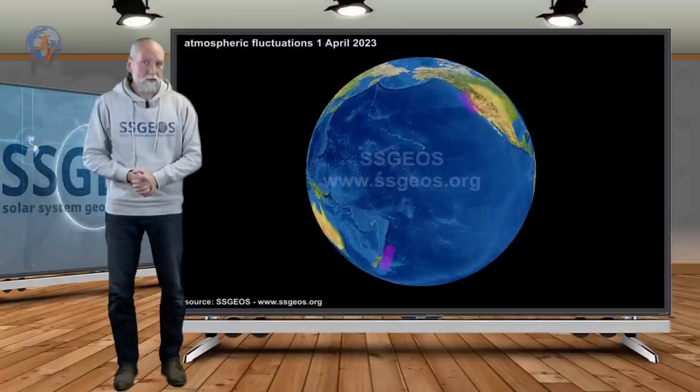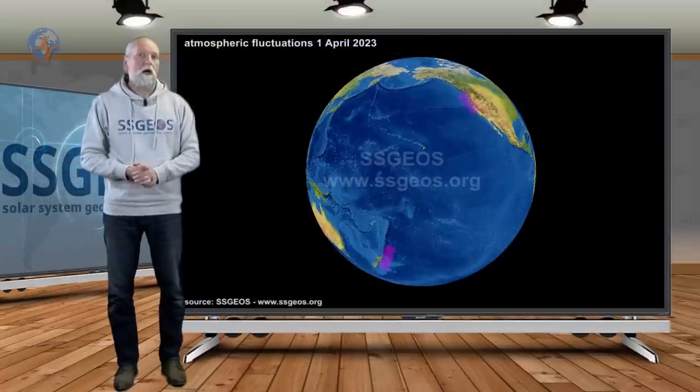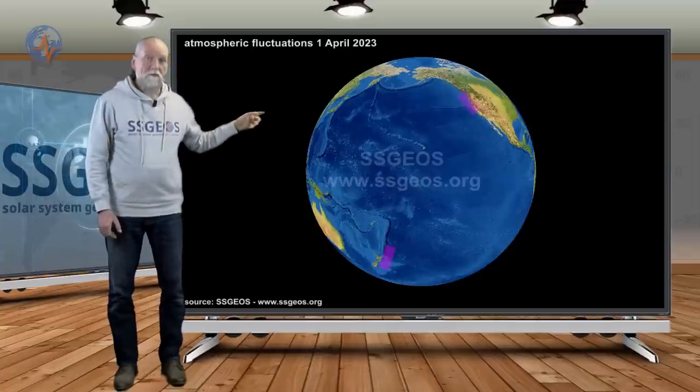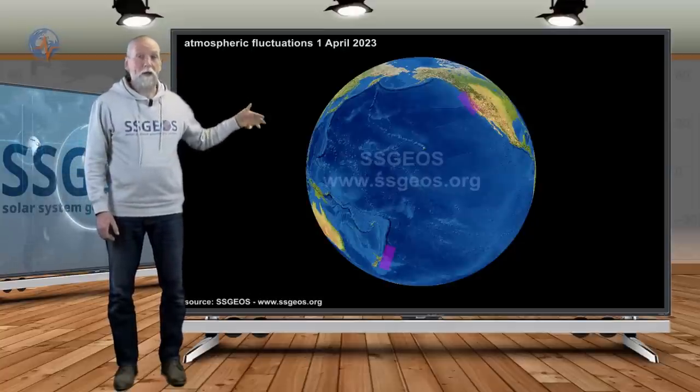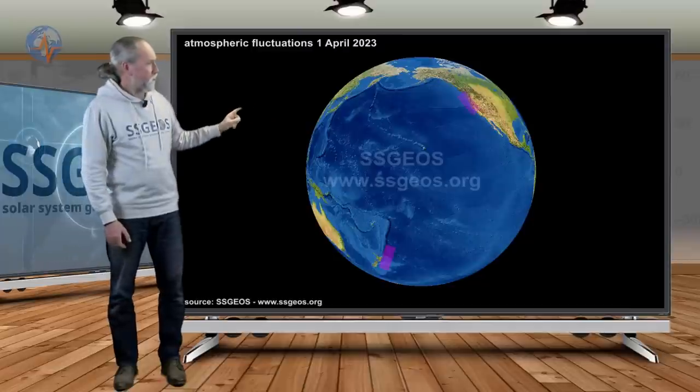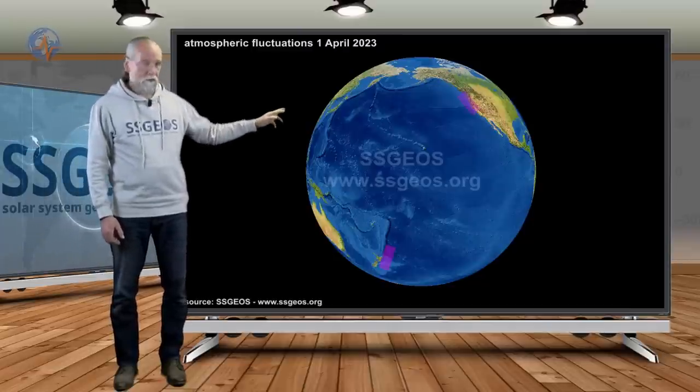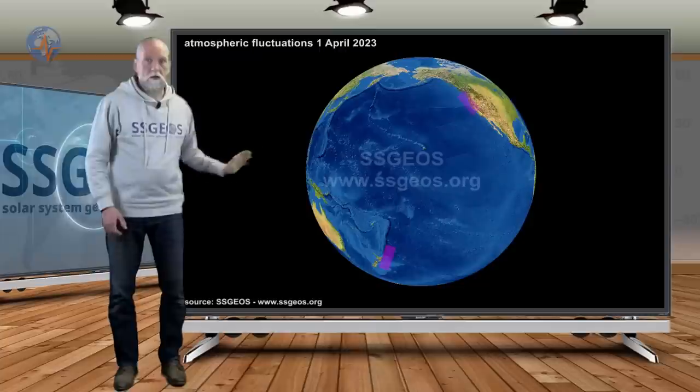If we look at the atmospheric fluctuations, I already mentioned the fluctuations on the 1st. If we add about eight days we end up later today or tomorrow. Those fluctuations were over the west coast of North America and just west of New Zealand.